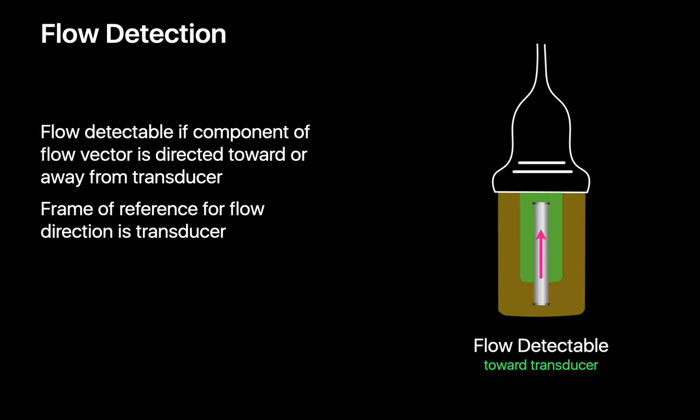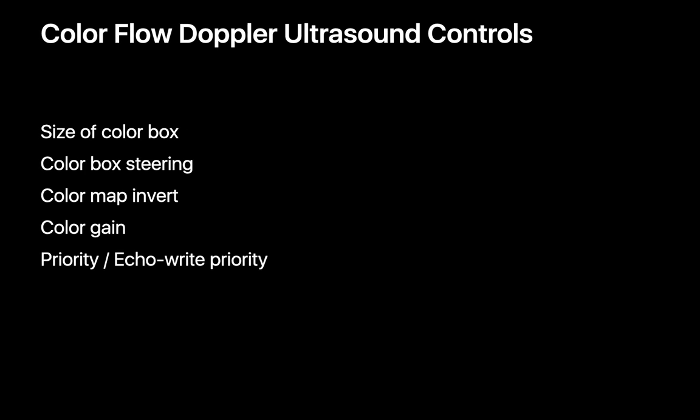Color flow Doppler imaging is able to distinguish and visually render whether the axis of flow relative to the transducer head is approaching or receding. When doing color flow Doppler imaging, there are five parameters you need to control: the size of the color box, steering the color box, which color — usually red versus blue — you want to assign to flow heading towards versus away from the transducer, color gain, and echo right priority.